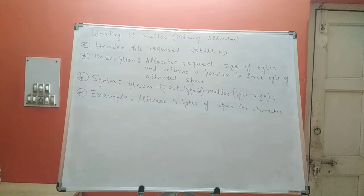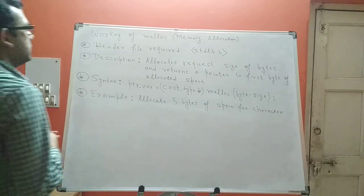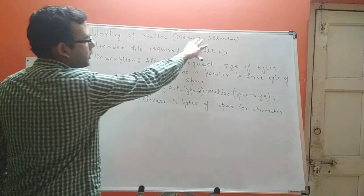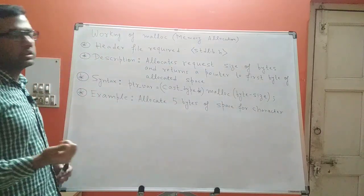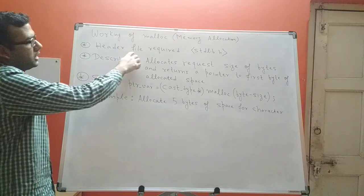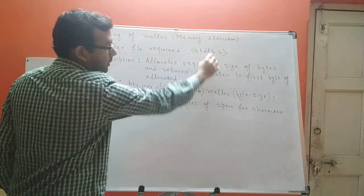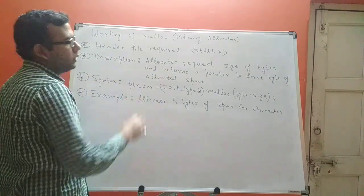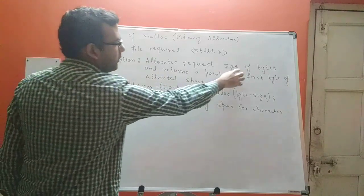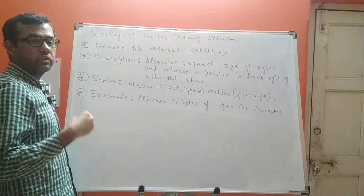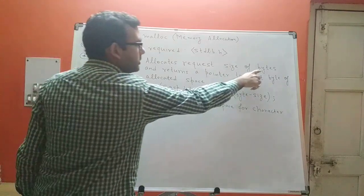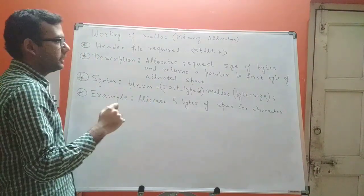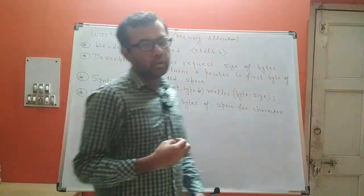In this video we will discuss the working of the most popularly used memory management function, that is malloc. Malloc stands for memory allocation. If you have to use the memory allocation function, you must include the header file standard library. What malloc actually does is allocate the requested size of bytes — the amount of memory you have specified in terms of bytes — and it will return a pointer to the first byte of the allocated space.